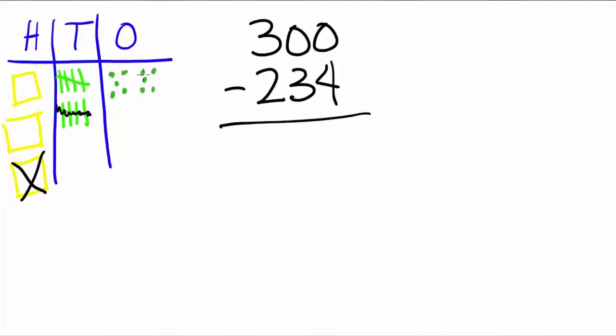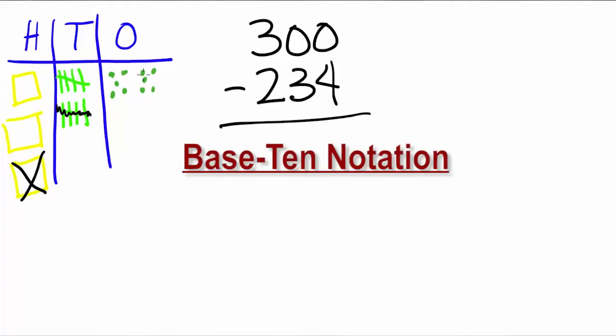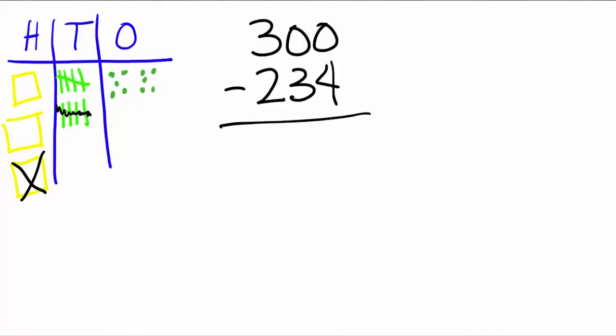Good, I have all 300 still here, just regrouped to make the subtracting easier. I need to tend to my base 10 notation though. We can see that the base 10 notation looks like what we're used to. But the base 10 blocks and regrouping show the true value of the numbers and help to explain what the notation means.